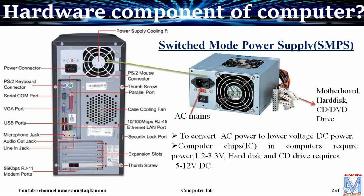We know that a computer comprises different components such as ICs, hard disk, and CD drives. The IC, also known as integrated circuit, works on very low voltages such as 1.2 to 3.3 volts, and hard disk as well as CD drive works on voltages from 5 volt to 12 volt DC. These voltages are obtained from the SMPS.